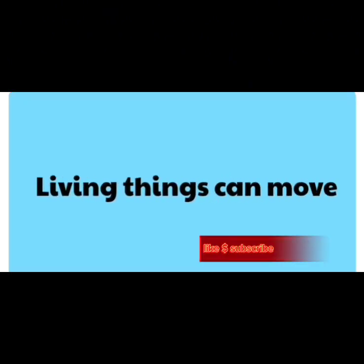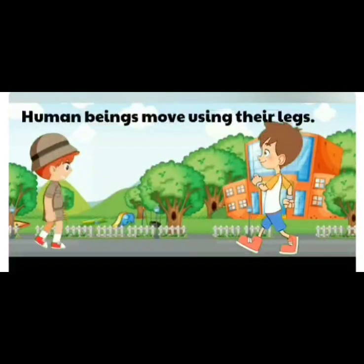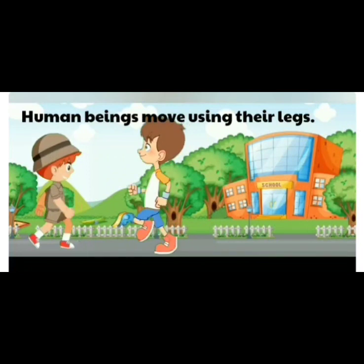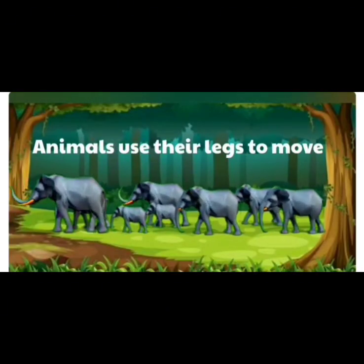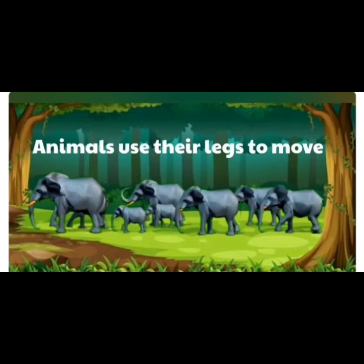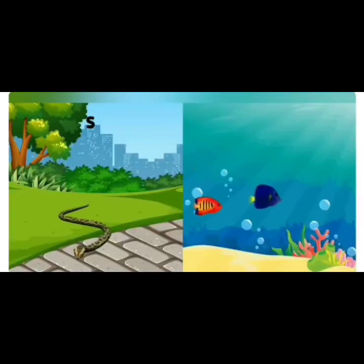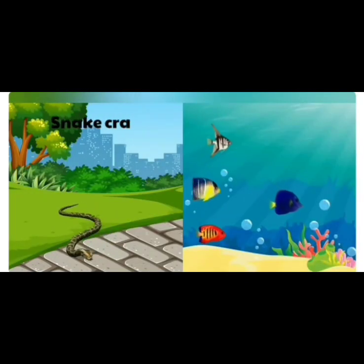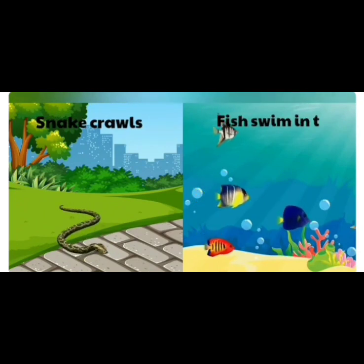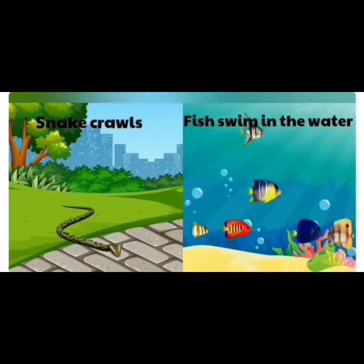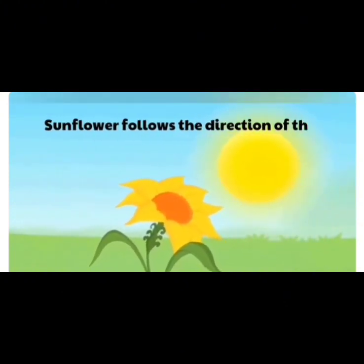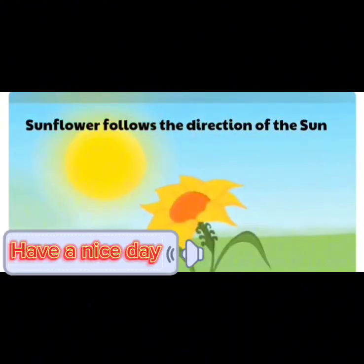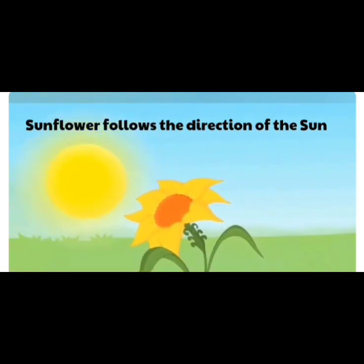Living things can move. Human beings move using their legs. Animals also use their legs to move. Animals without legs crawl, slide or swim using their body. Plants also show some movement, like the sunflower follows the direction of the sun.